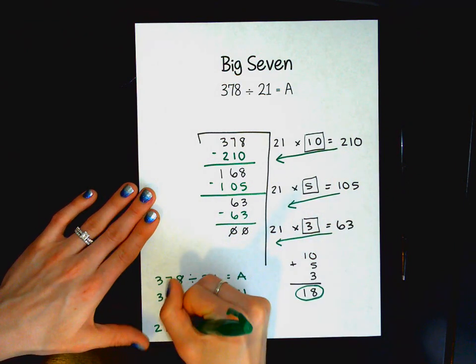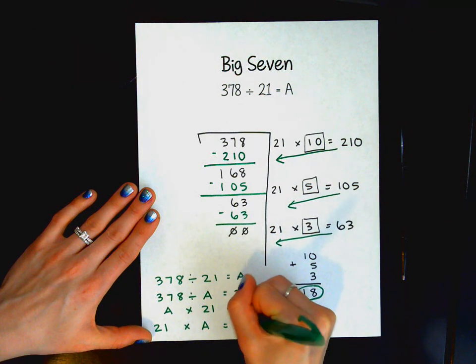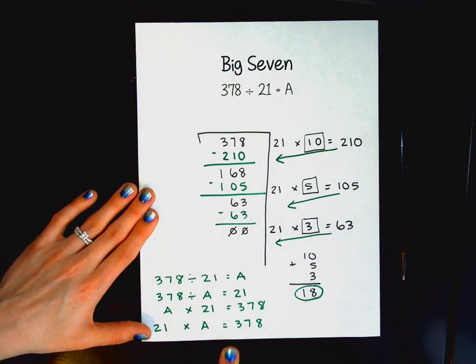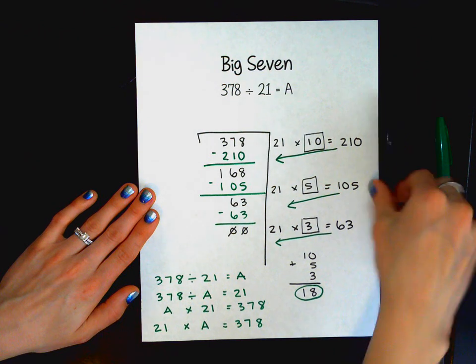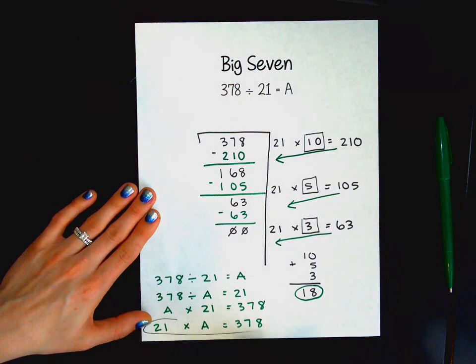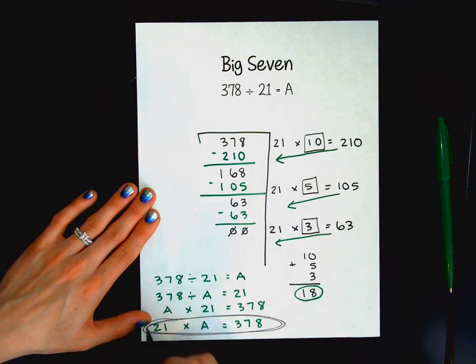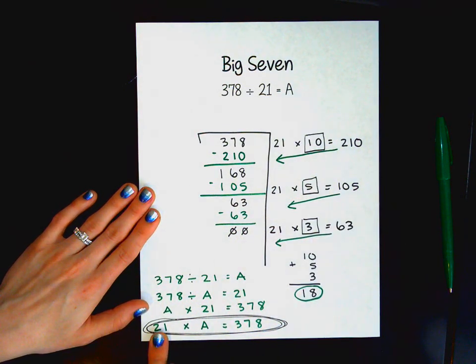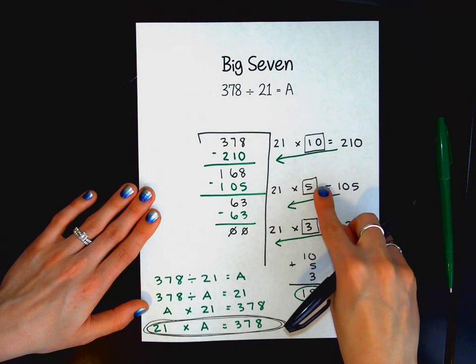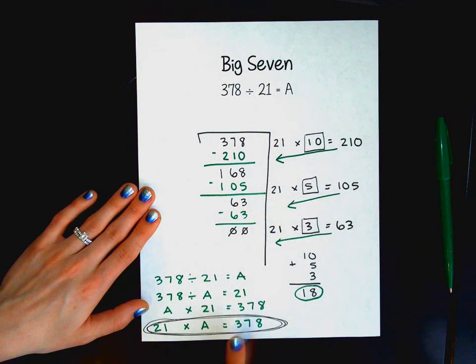And I could do A times 21 and get a product of 378. Or I could solve 21 times A and also get the same product of 378. Big Seven was helping me by taking this strategy of multiplication and helping me solve. 21 times 10 plus 5 plus 3 got me a final product of 378.